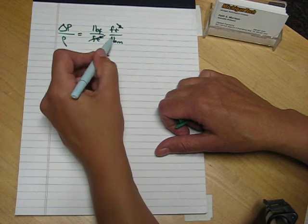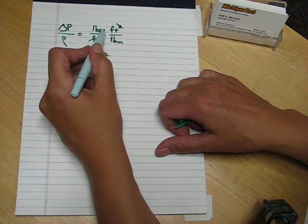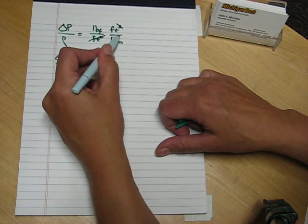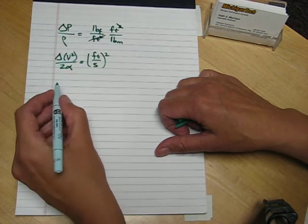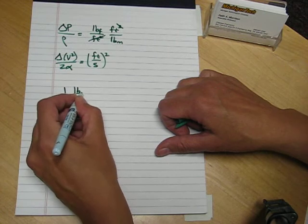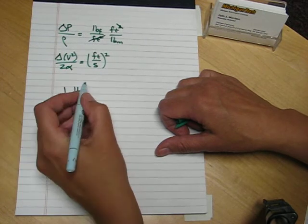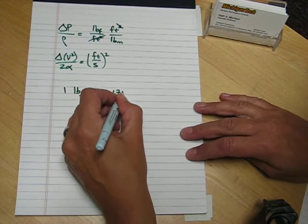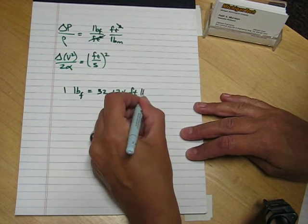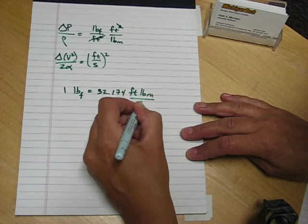The resolution of this force unit and this mass unit comes from the definition of the pound force. One pound force is equal to 32.174 foot pound mass per second squared.